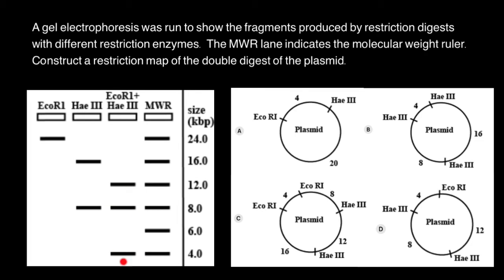If we combine all these three bands, we are going to get 24,000 base pairs. So take a look, 4 plus 8 plus 12 is going to be 24,000 base pairs.